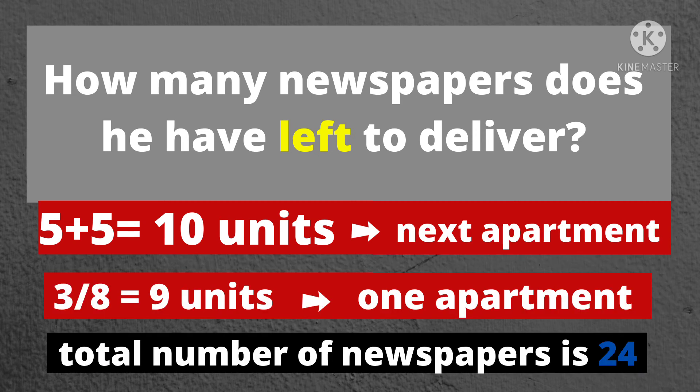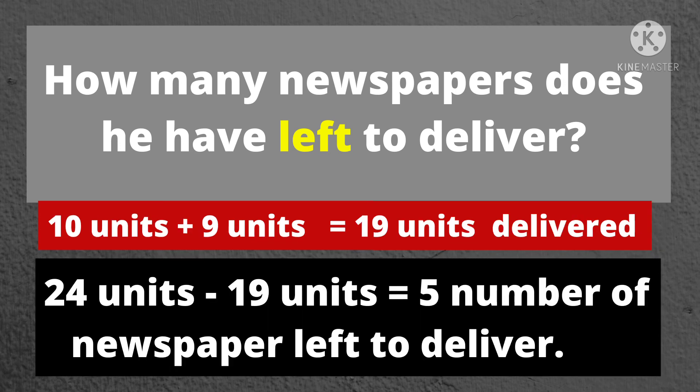We have now identified the number of units delivered on one apartment which is 9, and 10 for the next apartment. Their total number is 19. Let's go back to the question. How many newspapers does he have left to deliver? There are 19 newspapers delivered to the first and next apartment. Since we have the total number of newspapers which is 24, let's subtract it by 19 units.